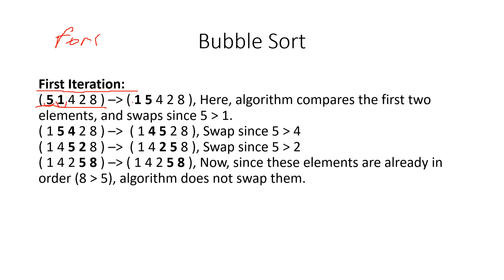We see that the next element, 1, is smaller than the previous element 5, so we swap them — we have 1 and 5. On the next step we compare 5 and 4; the next element is less than the previous, so we swap them. Then we compare 5 and 2 and swap again. When we compare 5 and 8, the next is bigger so we leave it — this completes the first iteration.